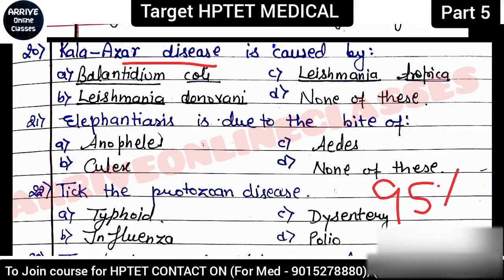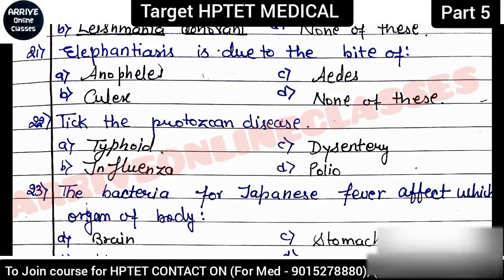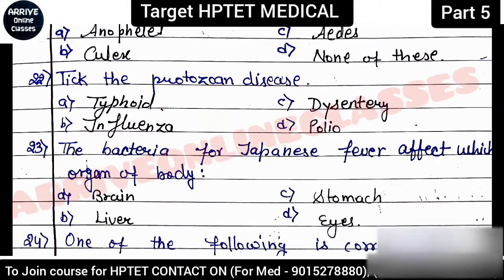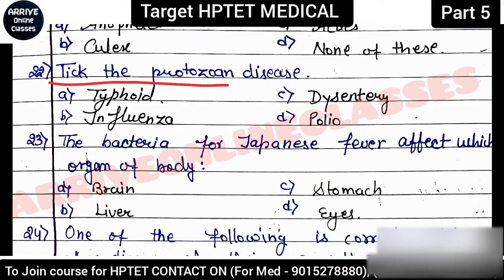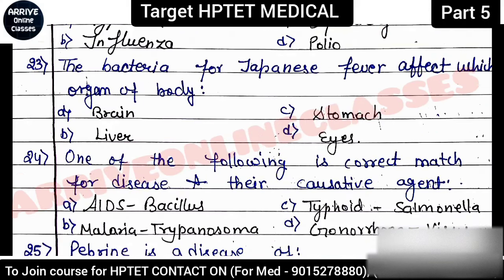Next question: 'Kala-azar disease is caused by?' Kala-azar is considered fatal — 95% of cases lead to death. It is also called black fever or dum-dum fever. The correct answer is option B: Leishmania donovani. Next: 'Elephantiasis is due to the bite of?' Culex mosquito is the vector. Next: 'Identify the protozoan disease.' Polio and influenza are viral, typhoid is bacterial — so the correct answer is dysentery, caused by Entamoeba histolytica.